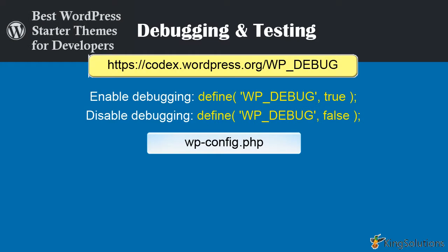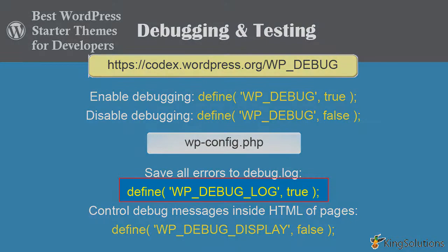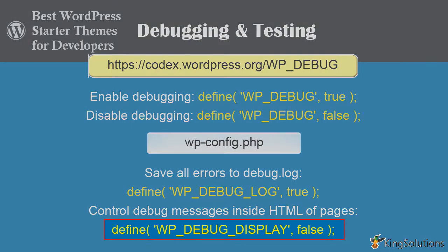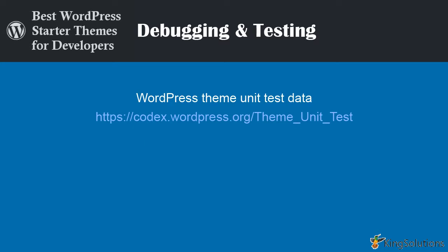In addition to a WordPress starter theme, do not forget to activate debug mode using the global variable WP_DEBUG. This should be done in your WordPress installation's wp-config.php file. You can also use the WP_DEBUG_LOG and WP_DEBUG_DISPLAY constants to extend WP_DEBUG. WP_DEBUG_LOG causes all errors to also be saved to a debug.log file inside the wp-content directory — useful if you want to review all notices later or need to view notices generated off screen. WP_DEBUG_DISPLAY controls whether debug messages are shown inside the HTML of pages or not.